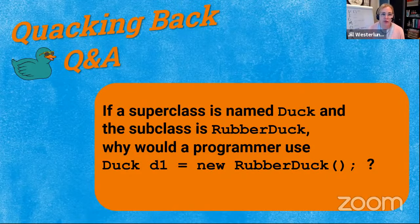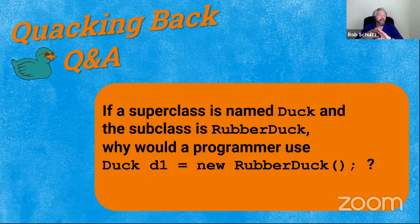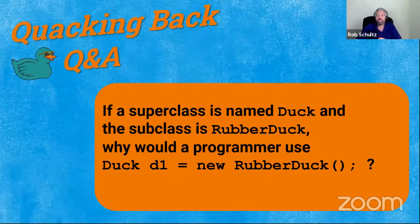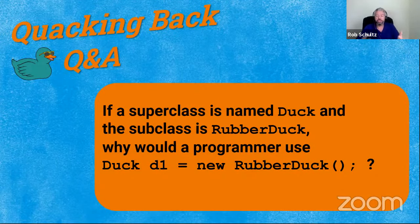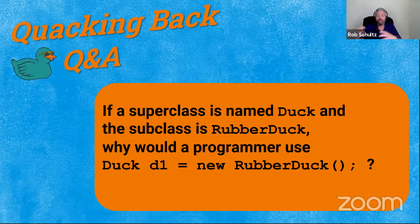Question number one from feedback yesterday was about: if we have a duck superclass and a rubber duck subclass, why would you do 'Duck D1 equals new RubberDuck'? One of the labs we do towards the end of the year is we program a specific board game. It's a two-player game set up so that it can be played human versus human, human versus computer, or computer versus computer. In order to do that, we want each player to be able to move regardless of whether the player is a human or a computer.